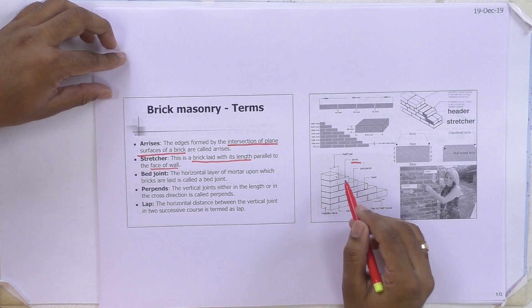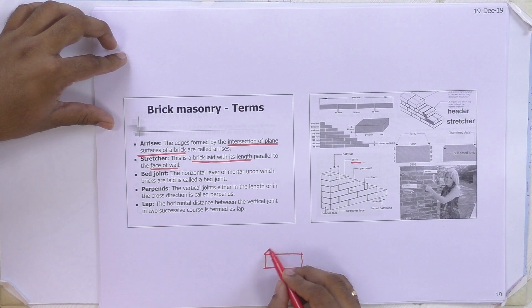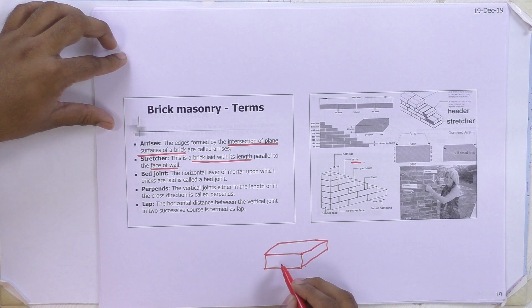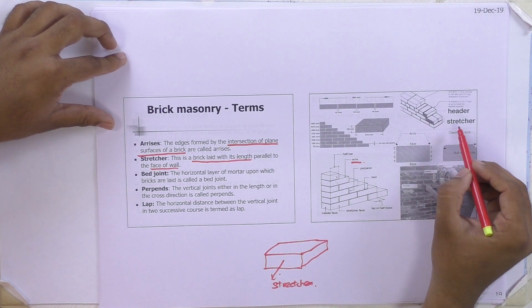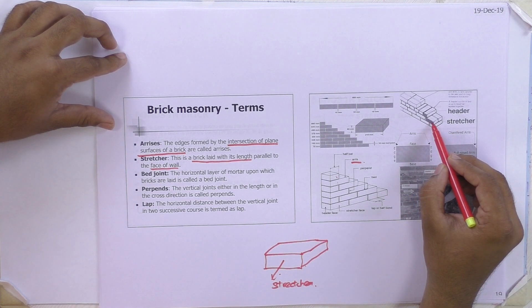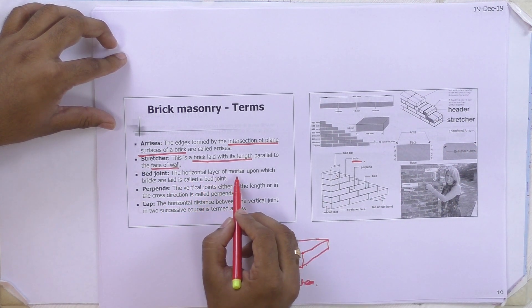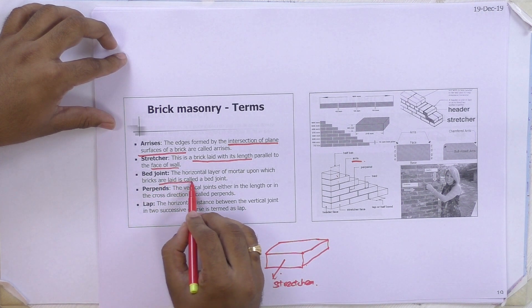I am going to draw a brick here in 3D modelling to illustrate. This face is the stretcher. Next one is bed joint — the horizontal layer of mortar upon which bricks are laid is called a bed joint.